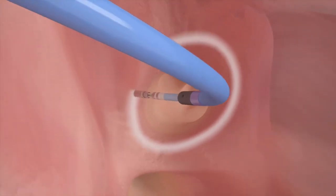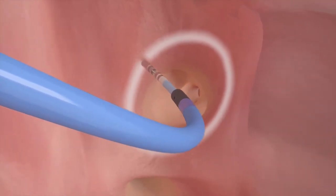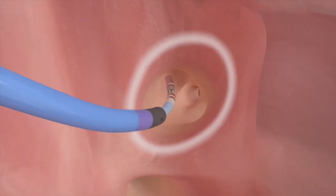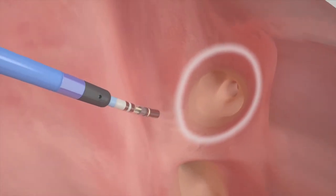The lesions that are created work to isolate and prevent the abnormal electrical signals originating from those pulmonary veins from reaching the rest of the heart.